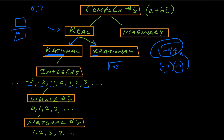For example, if I had 0.7, that's the same as 7 tenths — if you divide 7 by 10, you get 0.7, which is a rational number. Or if I had the square root of 25, that's 5, which can be written as 5 divided by 1. Anything divided by 1 is itself, so that's a ratio of two integers. Rational means either a ratio of an integer over an integer, a terminating decimal, or a repeating decimal. Repeating decimals can always be written as fractions — for example, 1 divided by 9 is 0.1111..., so that's rational too.